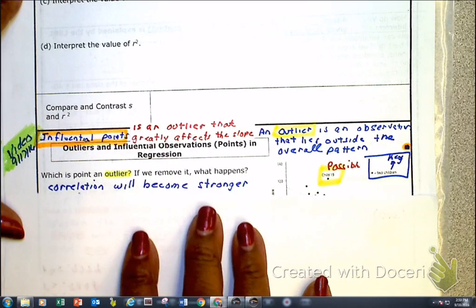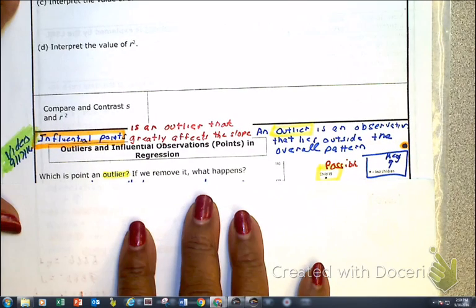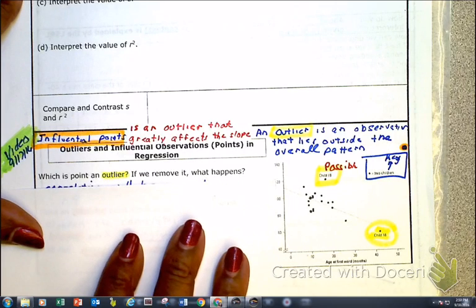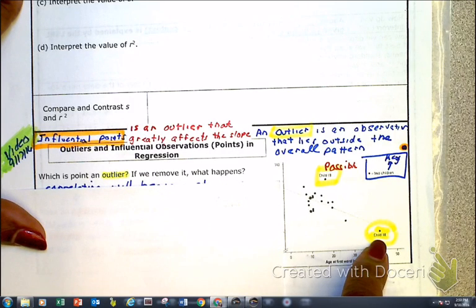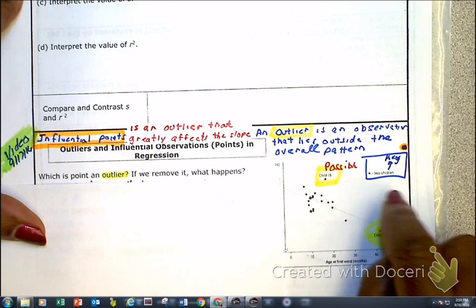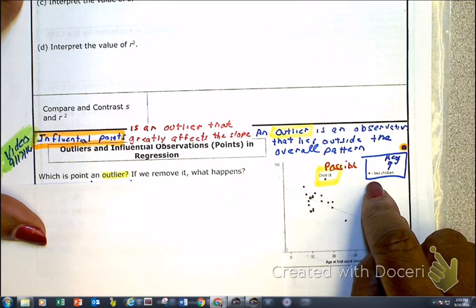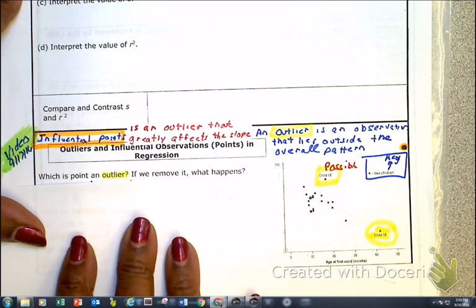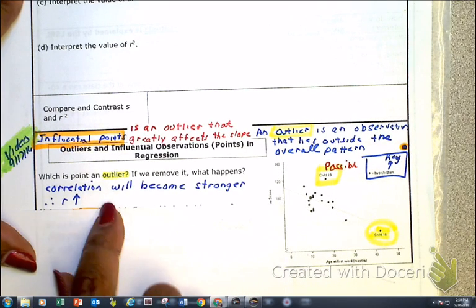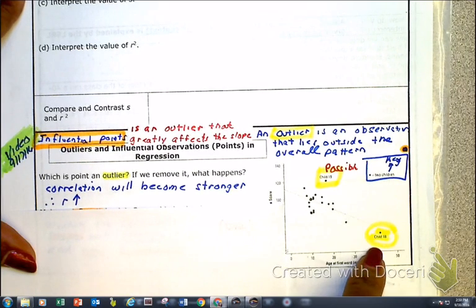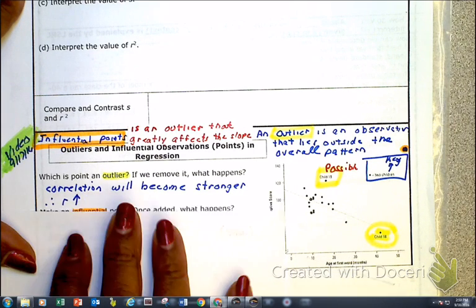So here, as we look at this, it's saying which of these points is an outlier. Remove it and see what happens. Well, I show that both of them, this is a possible outlier, and so is that one. That one's kind of iffy, but let's see. Oh, if you're thinking that's an outlier, no. That's telling you that one dot equals two children, so that's just a key. Yeah, fooled me for a second too.